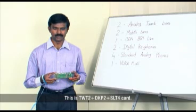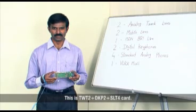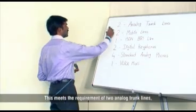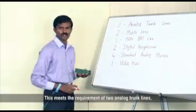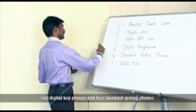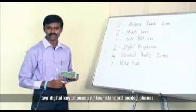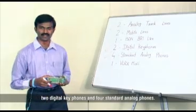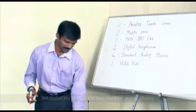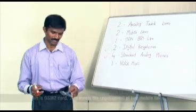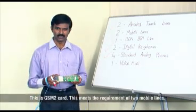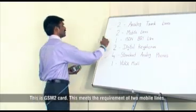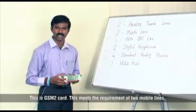This is TWT2 DKP2 SLT4 card. This meets the requirement of two analog trunk lines, two digital key phones and four standard analog phones. This is GSM2 card. This meets the requirement of two mobile lines.